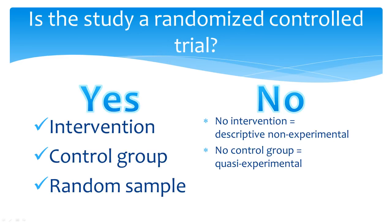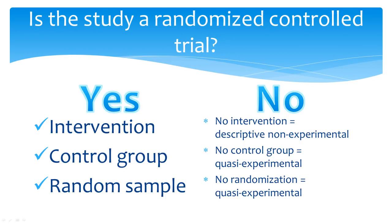If the sample was not randomized properly, adequately, or even at all, then the study is also quasi-experimental. You may also see this type of study called a non-randomized trial. Many randomized strategies exist, but basically, if a study is randomized, it means that everyone who entered the study had an equal chance of receiving the intervention under study. Some studies indicate that they were partially randomized, but these studies still do not count as true experiments.